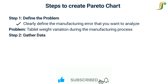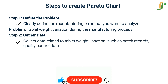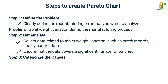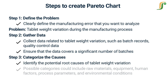Step 2 — Gather data: collect data related to tablet weight variation, such as batch records, quality control data, or any other relevant sources. Ensure that the data covers a significant number of batches and provides a comprehensive overview of the issue. Step 3 — Categorize the causes: identify the potential root causes of tablet weight variation.